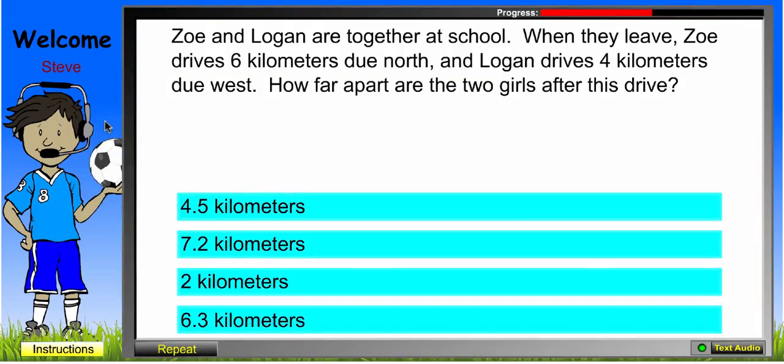Zoe and Logan are together at school. In this particular question, because it's a word problem, we actually read the text to the students because we want to control for a reading issue. All of ADAM will have help anytime there's something that requires reading. The audio will kick in and students will be able to have the text read aloud to them.